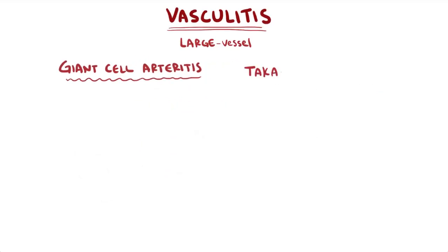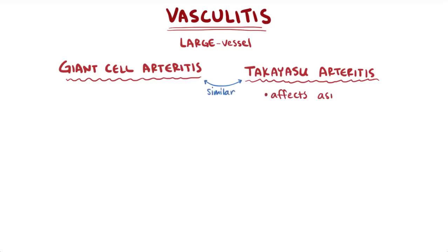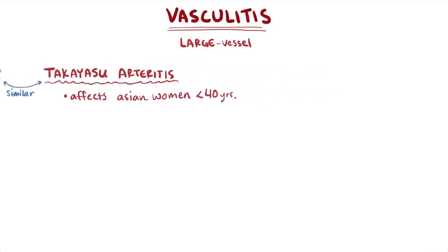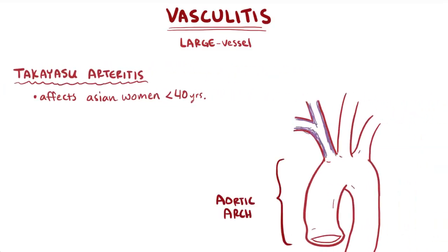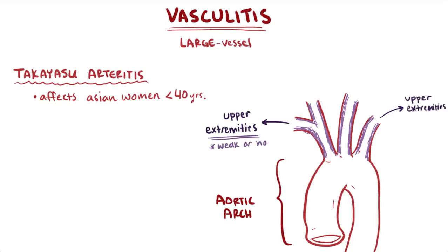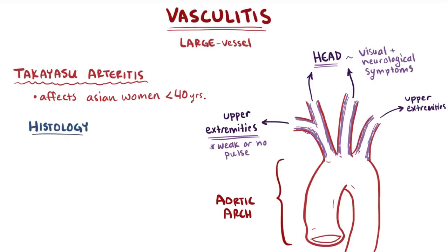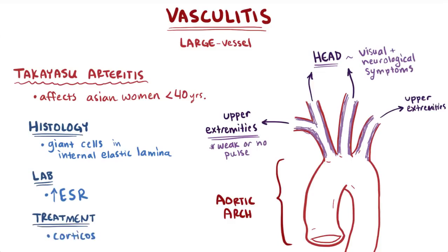Takayasu arteritis is very similar to giant cell arteritis with two key differences. First, it usually affects Asian women under 40 years old. Second, it affects arteries branching off from the aortic arch, particularly around the branch points. Inflammation around branches serving the upper extremities can cause weak or nonexistent pulse; around branches serving the head it can cause visual and neurological symptoms. Histopathologically, it shows giant cells and granulomatous inflammation in the internal elastic lamina. ESR is elevated and treatment is corticosteroids.